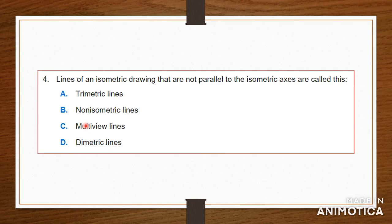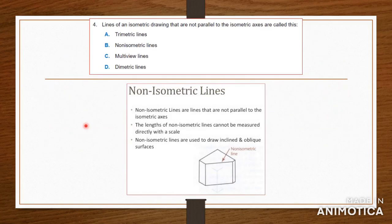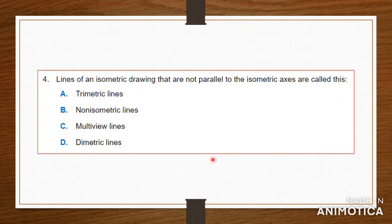Number four: lines of an isometric drawing that are not parallel to the isometric axis are called what? Remember we said that lines have to be parallel in the previous question. Those that are not parallel would be called non-isometric lines. Here you have your regular axes X, Y, and Z, and as you can see, this line is not parallel with any of those three — so it is called a non-isometric line.